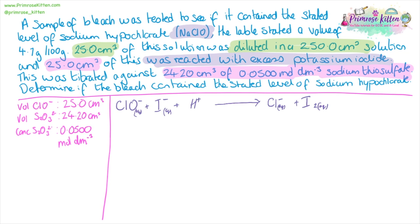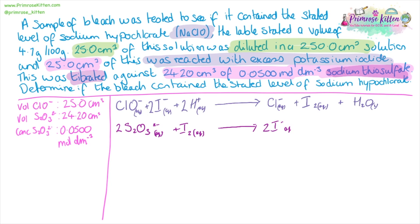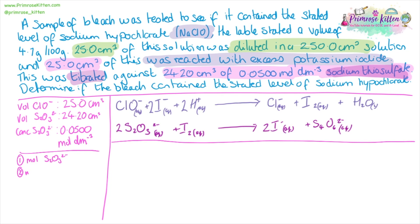It needs to be in acidic conditions as well. As the titration takes place, we're going to get a second reaction happening — our thiosulfate is going to react with the iodine, and they're going to go back to iodide ions, giving us our color change. For this we're going to work out the moles of thiosulfate, moles of the chlorate, moles of the chlorate in 250 cm³, and then answer the question. But first, we need to work out our ratios, because working out the ratios is the tricky part in these types of questions.